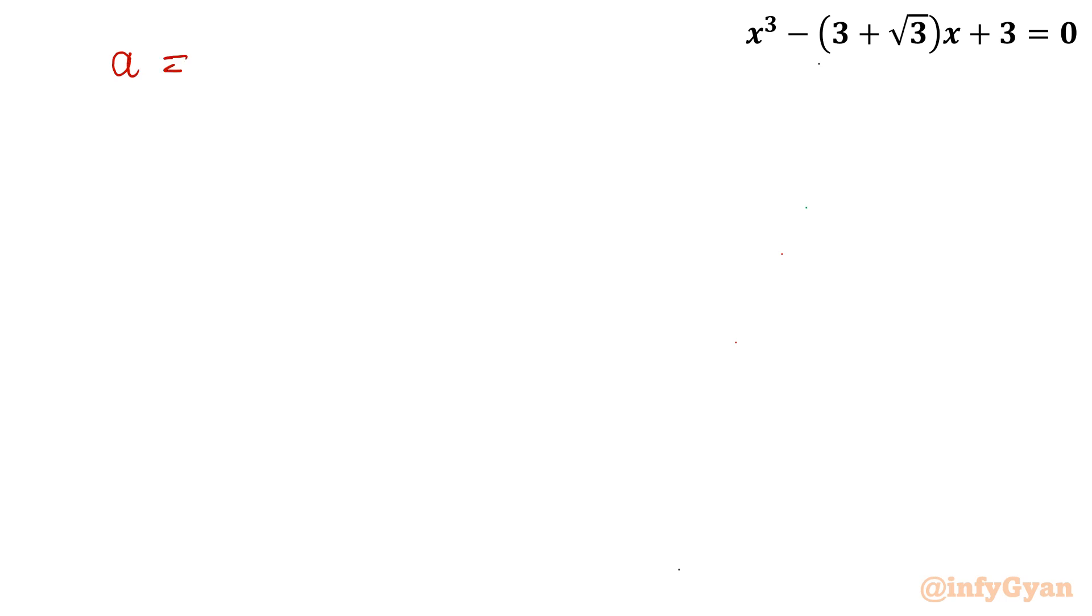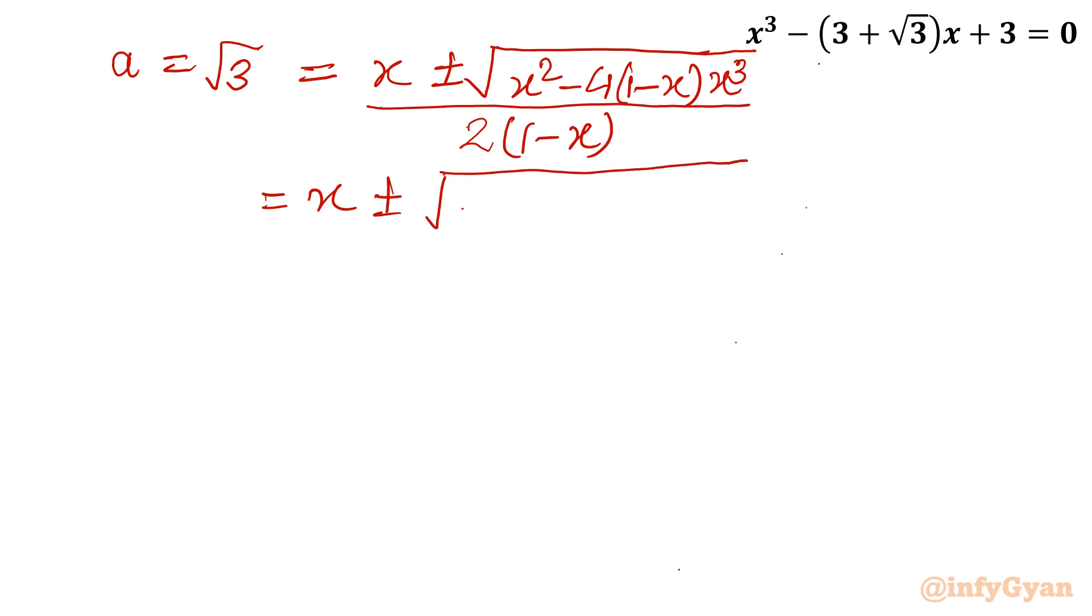Let's apply the values. What is a? Remember a is our consideration, that is √3 = -b. So b was -x, so x ± √(x² - 4(1-x)(x³)) / 2(1-x). Let's simplify: x ± √(x² - 4x³ + 4x⁴) / 2(1-x).